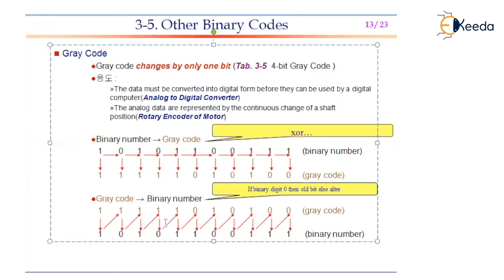This gray code is essential to implement because when analog signals need to be converted, straight binary code conversion is very difficult from analog. But analog to gray will always be proven to be very simple, so the converter logic will be simple. That's it. Thank you.